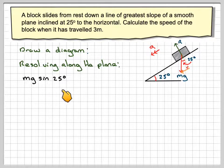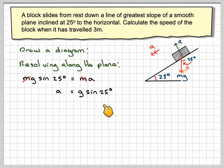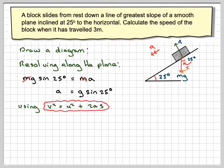So mg sine 25 is going to be equal to mass times acceleration. Now this is good because we don't actually need to know what the mass is in this situation, because the masses will cancel out. And then we get the acceleration is g sine 25 degrees. We'll just leave it like that because we're going to use it again.